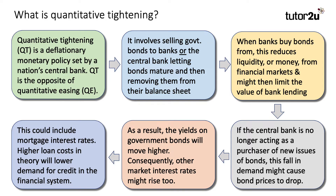So perhaps, for example, under quantitative tightening, the mortgage market would have less liquidity in it, and the cost of a mortgage loan — a fixed rate mortgage for five or ten years, for example — might go up. Higher loan costs, in theory, will then lower the demand for credit within the financial system: fewer people taking out mortgages, fewer businesses taking out loans.